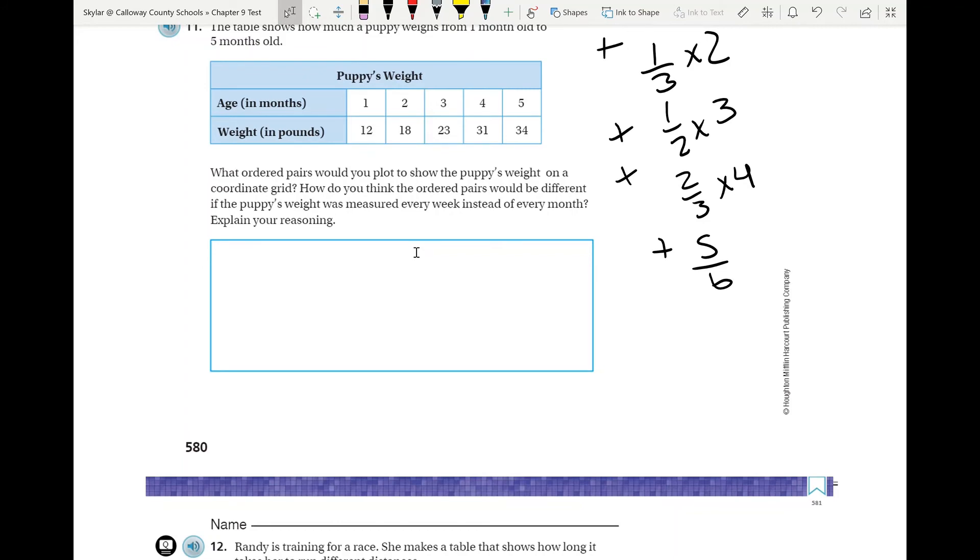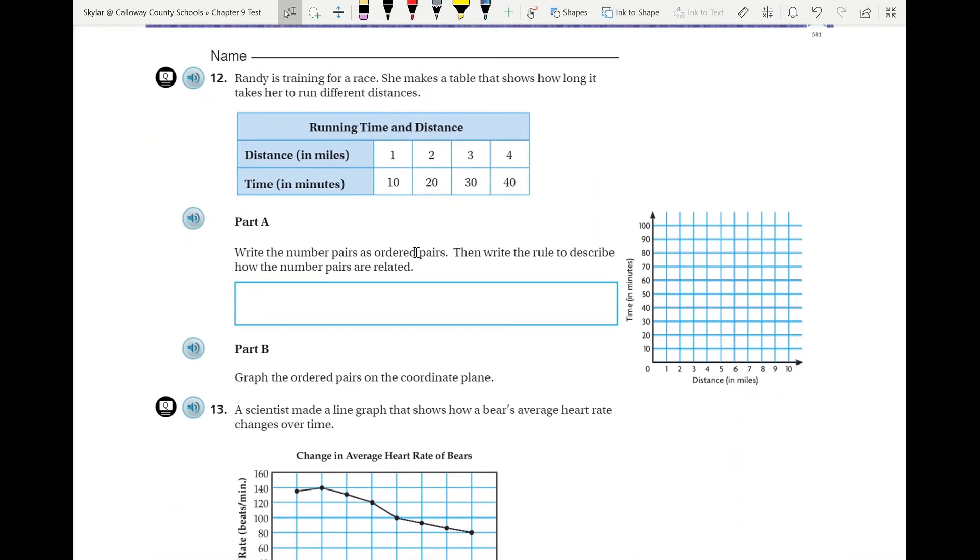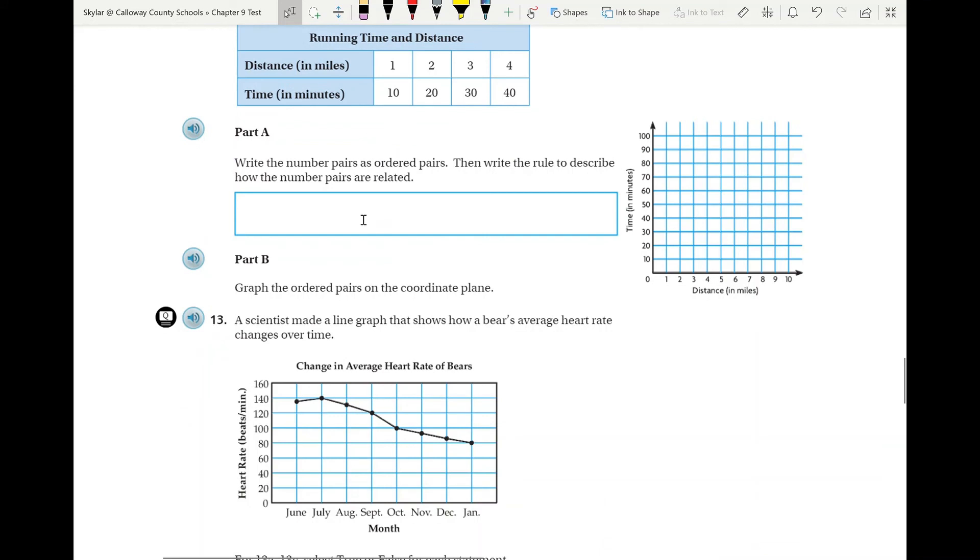All right, moving on along. Number 12: write numbers as ordered pairs. So take those numbers, turn them into ordered pairs, and then you need to think about some kind of rule. So what are you doing to get from that one to that ten? I'm sure you all can figure that out. And then for part B, you just take those ordered pairs and graph it over here. Remember that the first number in your ordered pair is always going to be your X value, the second number is the Y value. So remember, X-axis, Y-axis.